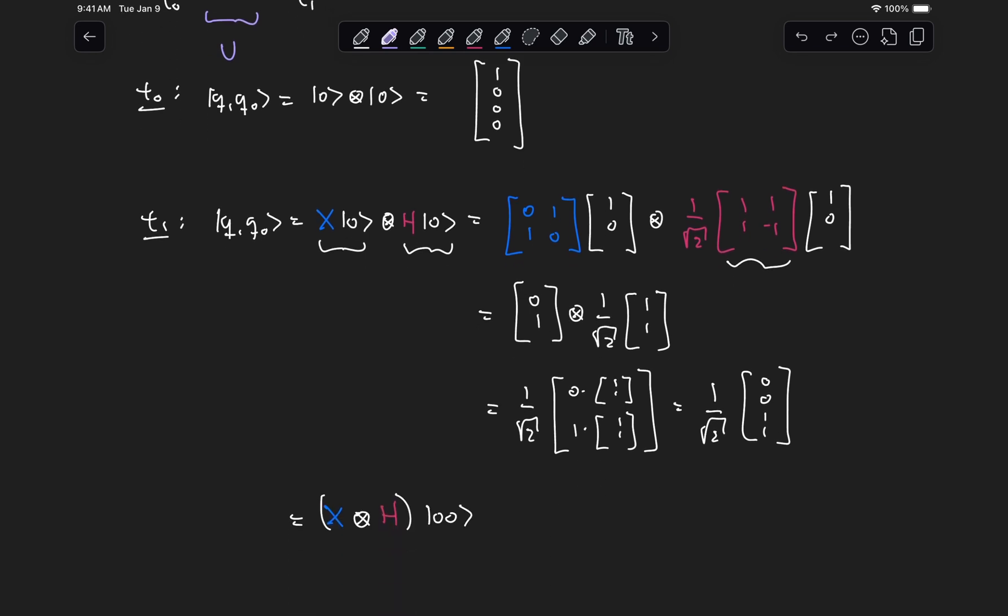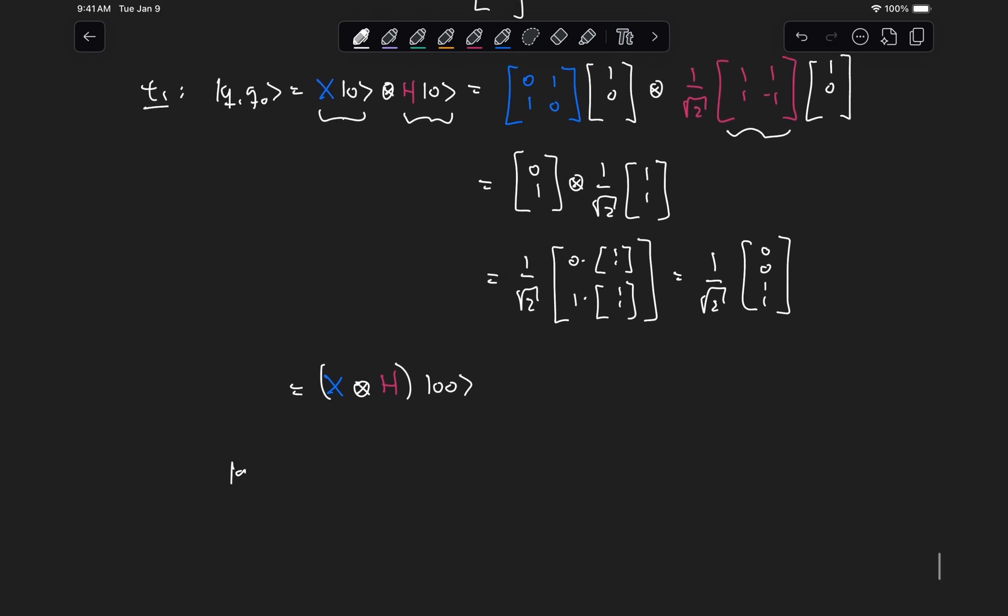Now, another thing we should get very comfortable with is not only working on the column vector representation, but also in bracket notation. So we could have equally done q1, q0 is equal to, let's copy this and put down here and say, well, this is ket 1.